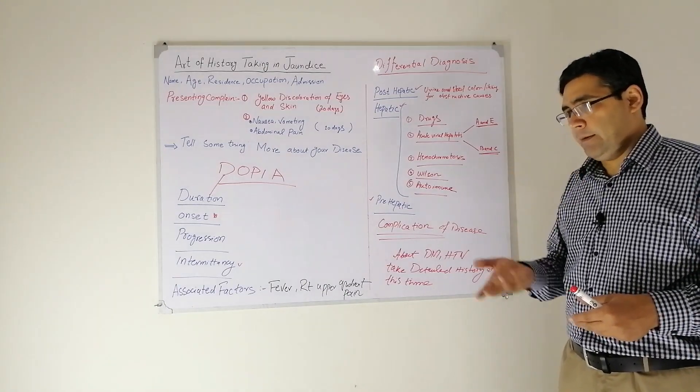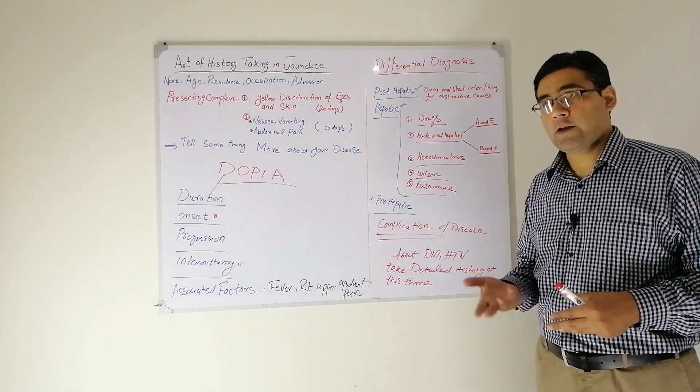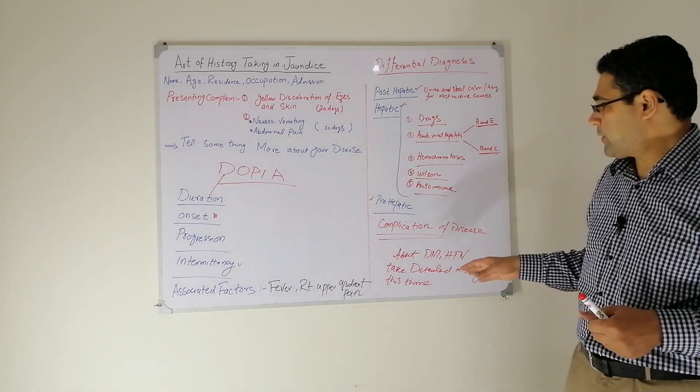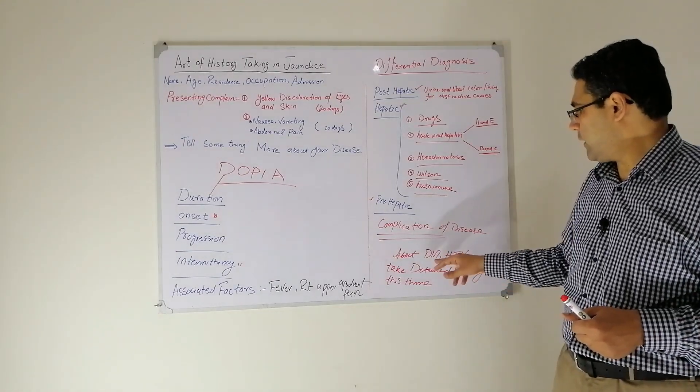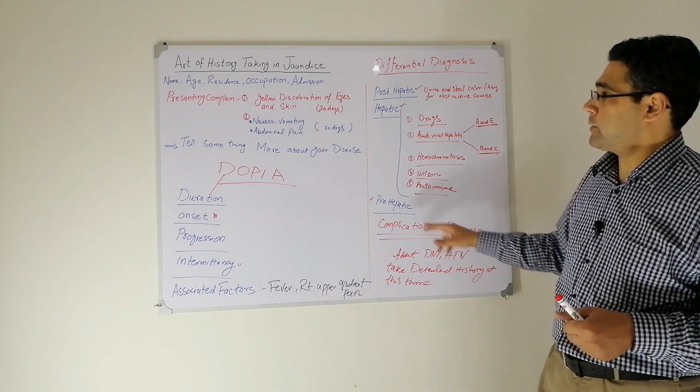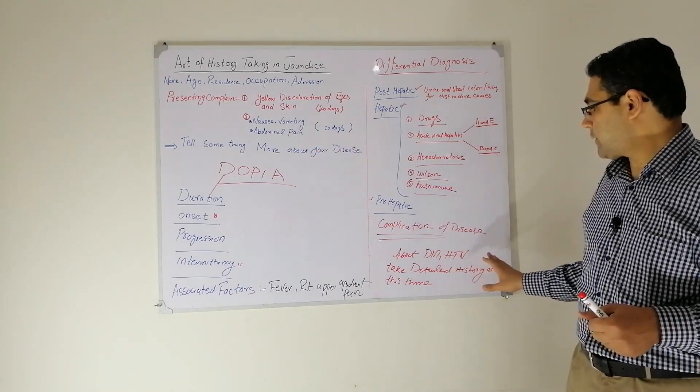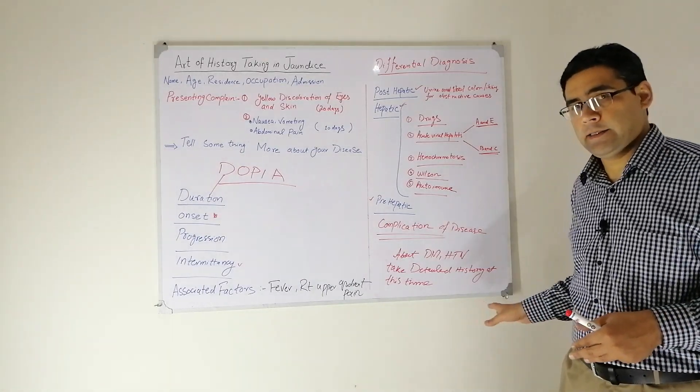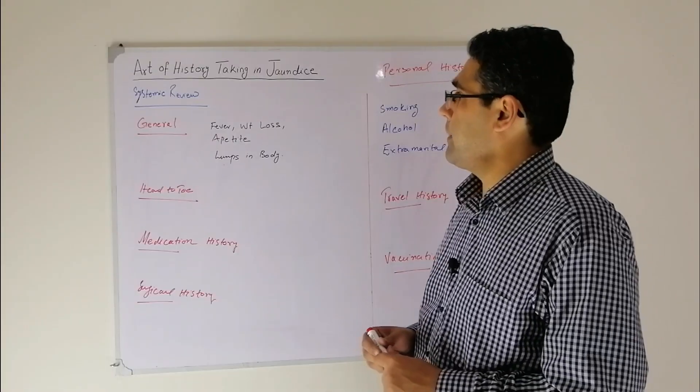And any worsening of conscious level. If the patient tells you about diabetes and hypertension in the start, now this is the time to ask about the diabetes and hypertension in detail.